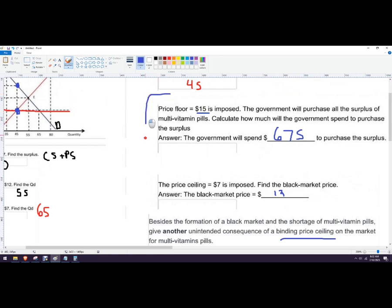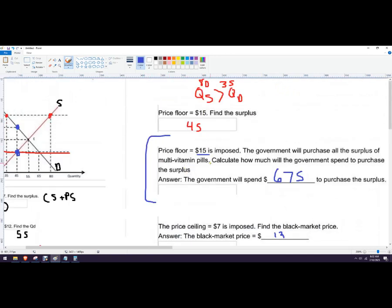So big one here. You just want to think about what is the surplus, multiply the surplus by $15. And that tells you how much the government's going to spend in order to do that subsidy.